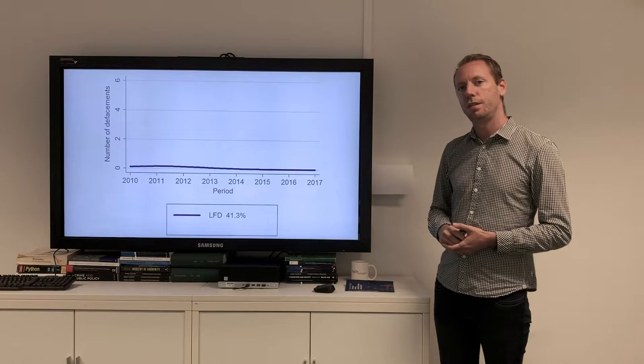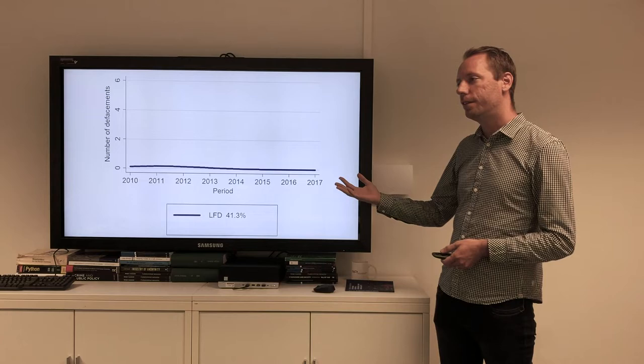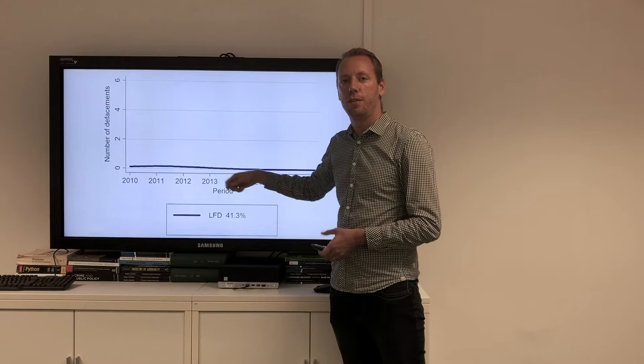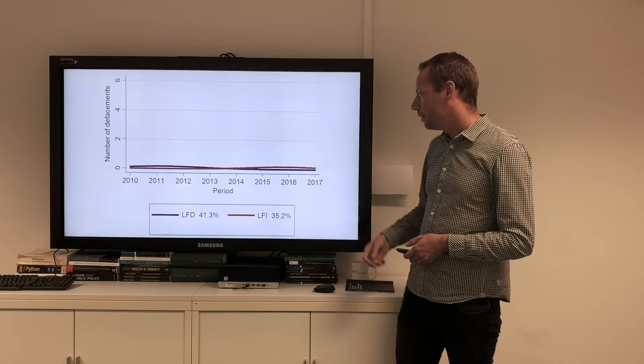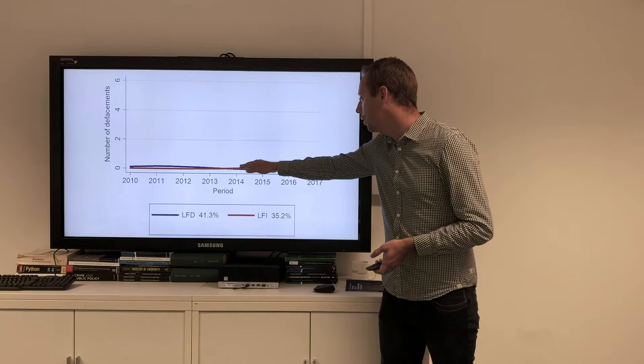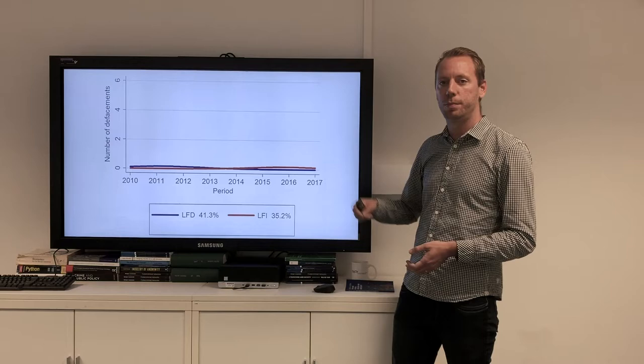For the results, we got a five-group trajectory model. This is the first group, the biggest one, labeled as the low-frequent desisting group. Those are the people who only commit a couple, like one, two or three defacements, and they do it in the early years of the research period between 2010 and 2014. Then we have a quite similar group, also only attacks a couple of websites, but they do it more in the later years of the research period. They're called the low-frequent increasing group.